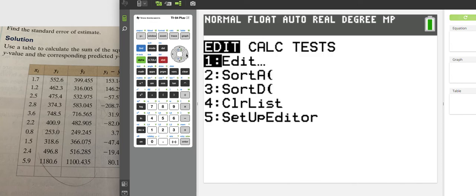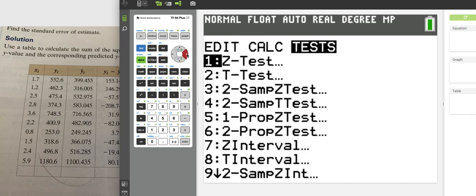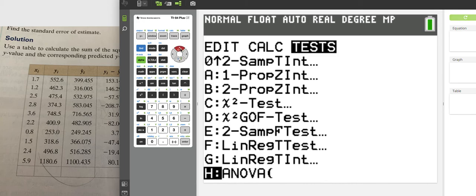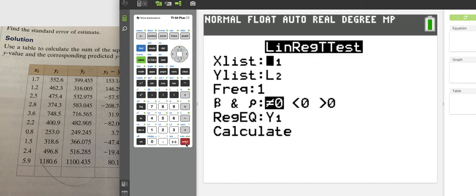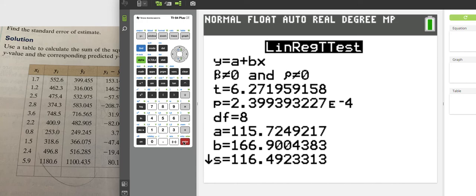By calculator it's a lot easier. Go to calculate, go to tests, LinReg t-test, L1, L2, hit enter. My standard error is s = 116.49.